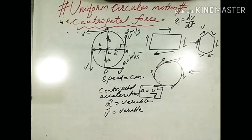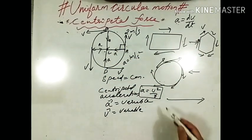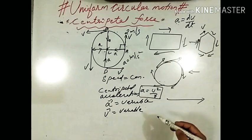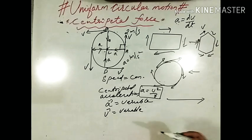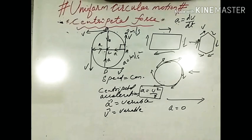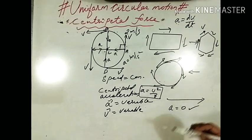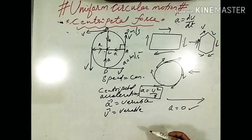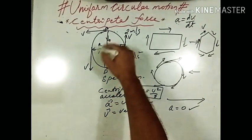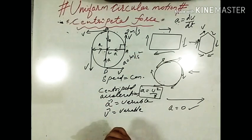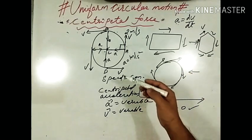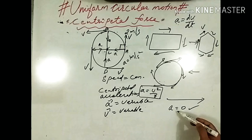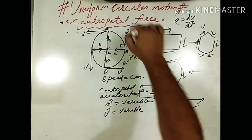What is the difference between uniform circular motion and uniform linear motion? In linear motion, a body moves in a straight line. In uniform linear motion, speed and velocity are constant, so acceleration is zero — it is an unaccelerated motion. In the case of uniform circular motion, velocity is variable, so it is an accelerated motion. That is the key difference: uniform linear motion is unaccelerated, while uniform circular motion is accelerated.